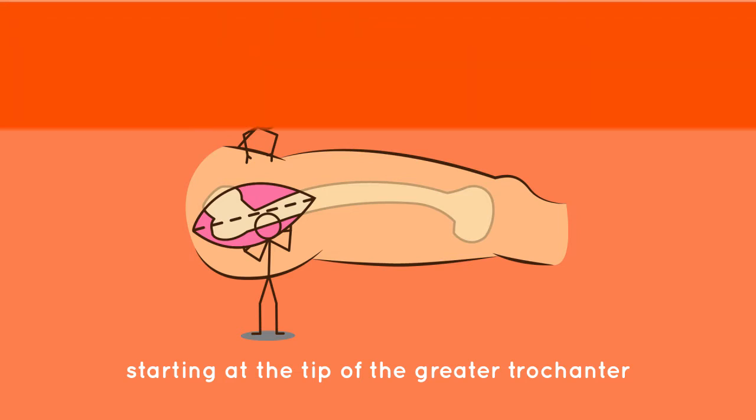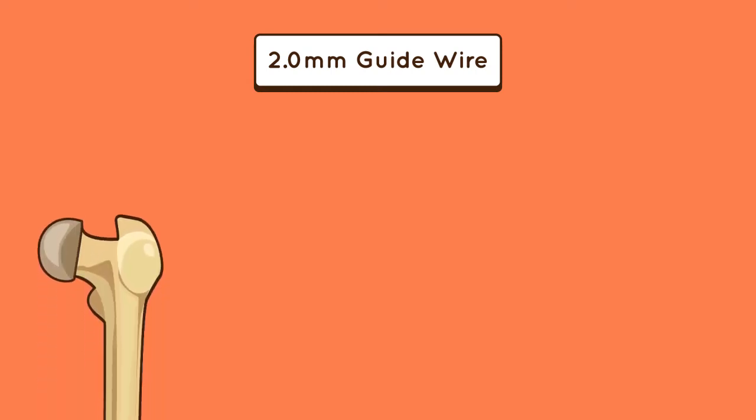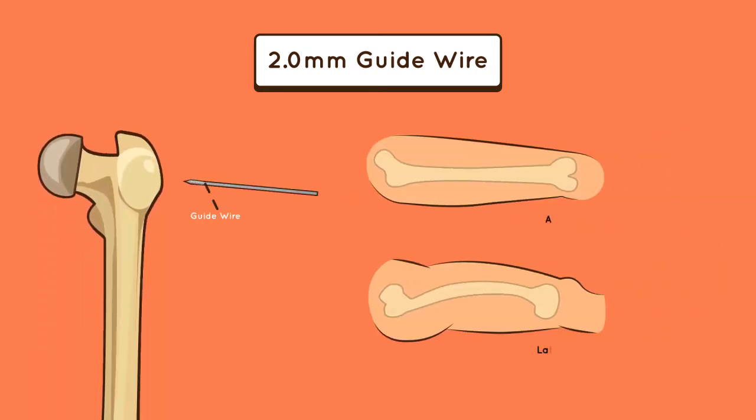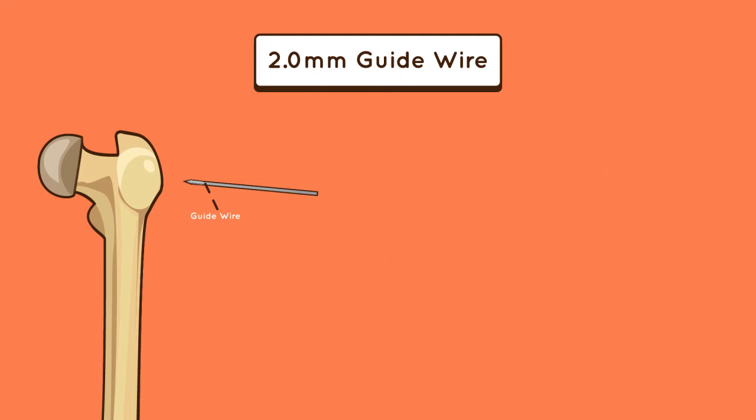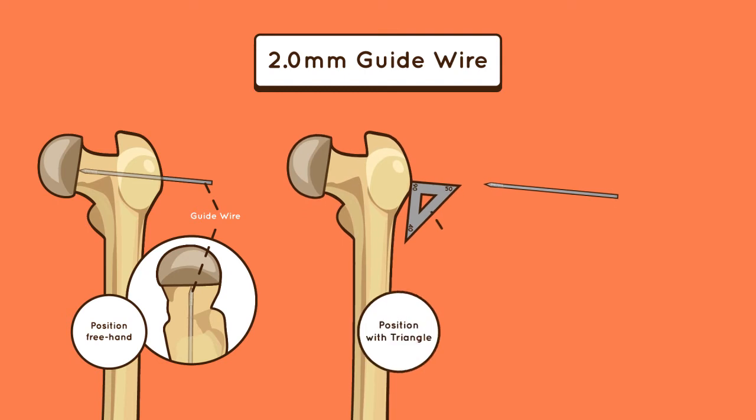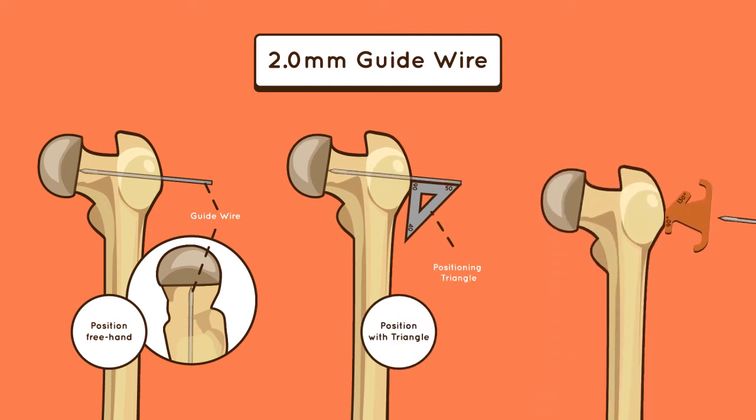Perform a straight lateral incision starting at the tip of the greater trochanter to visualize the affected area. Step 3: guide wire insertion. Insert the 2 millimeter guide wire in the center-center position in both the AP and lateral views. The wire can be inserted freehand using a positioning triangle or the wire guide.